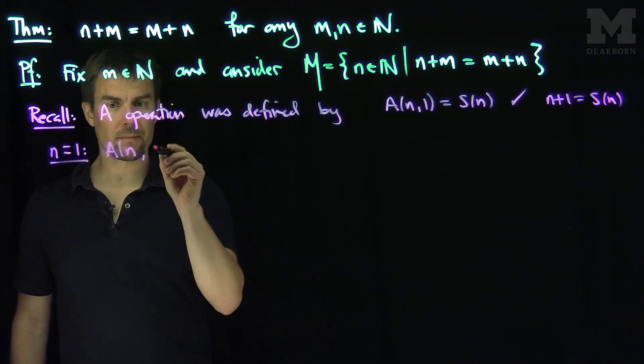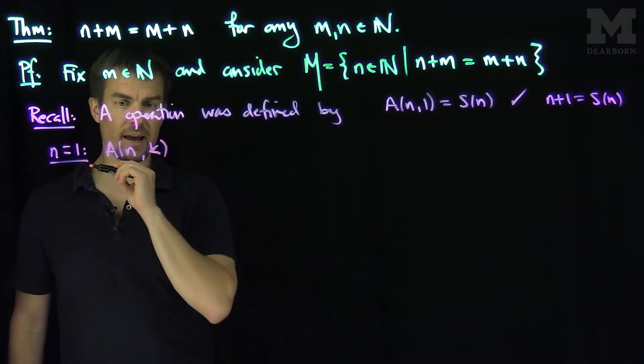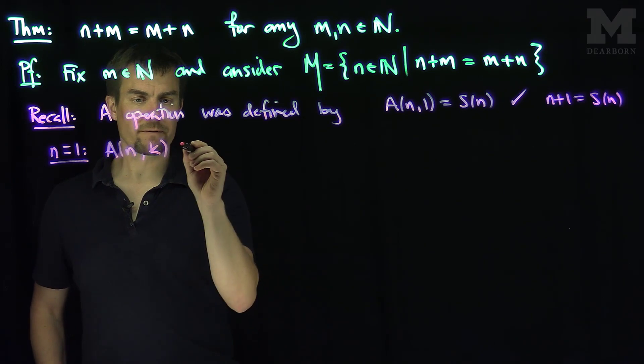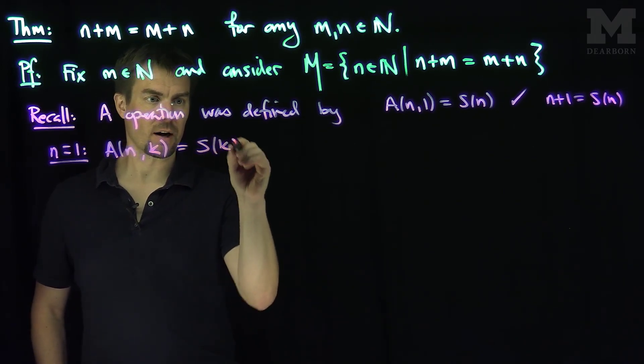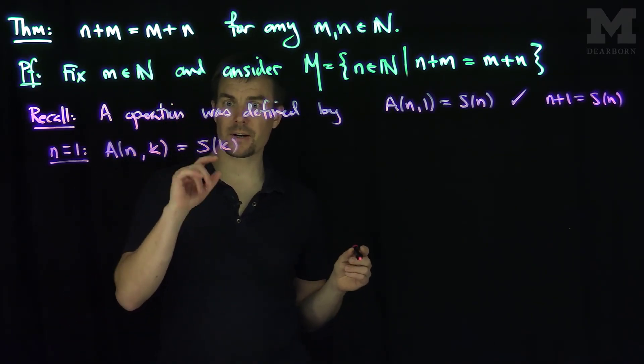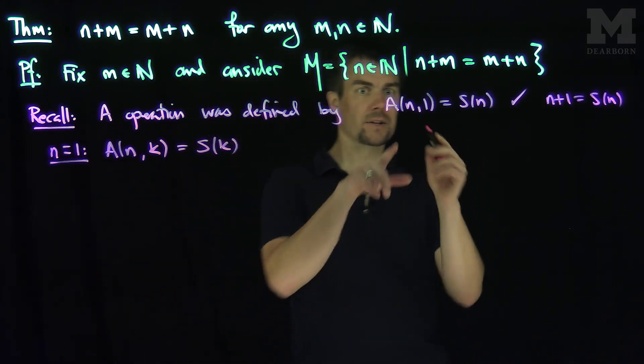So A of any value over here, in particular we can say it's true for m. So A for any value k was defined as just the successor of k. Now, what this tells us in particular, I can plug in n equals 1.